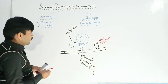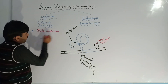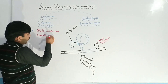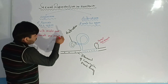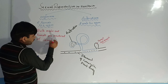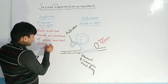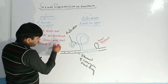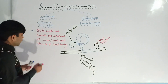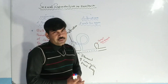Both the male and female structures — that is, the antheridium as well as the oogonium — are produced at the same short branch of the plant body, also called the thallus. So a small outgrowth appears on this short branch where the oogonium will begin to develop.